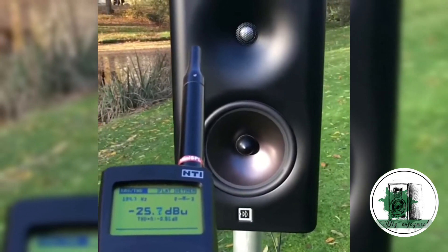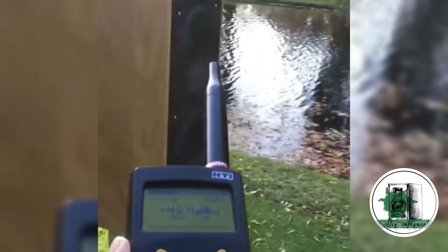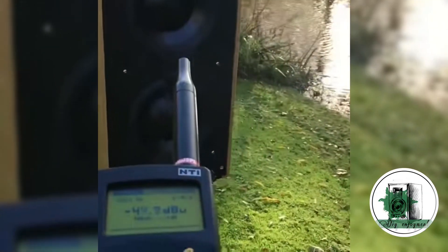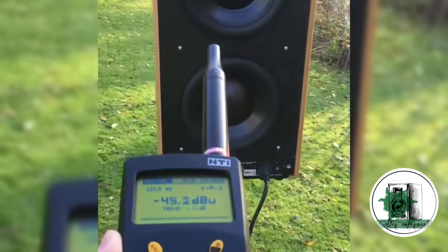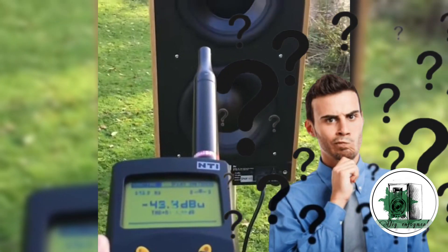As he walks around the speaker, the sound pressure gradually decreases until he reaches the rear side. At the rear, the sound pressure becomes significantly weaker, dropping by 20 dB. But what's the purpose of this reduction?